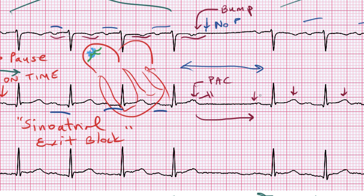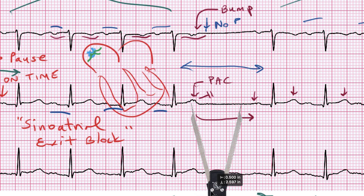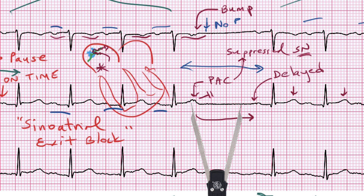If we take our calipers set for the P-to-P interval and measure from the PAC, we see that this sinus beat was delayed by about 200 milliseconds or so. It got delayed because it takes about 100 milliseconds for the PAC to get into the sinus node, reset it, and for the next impulse to come back out again. So indirectly, we're actually measuring the sinoatrial conduction time, which is discussed in the expert-level course when dealing with electrophysiologic testing and determining sinus node function. So this delay in the next sinus beat is all to be expected.